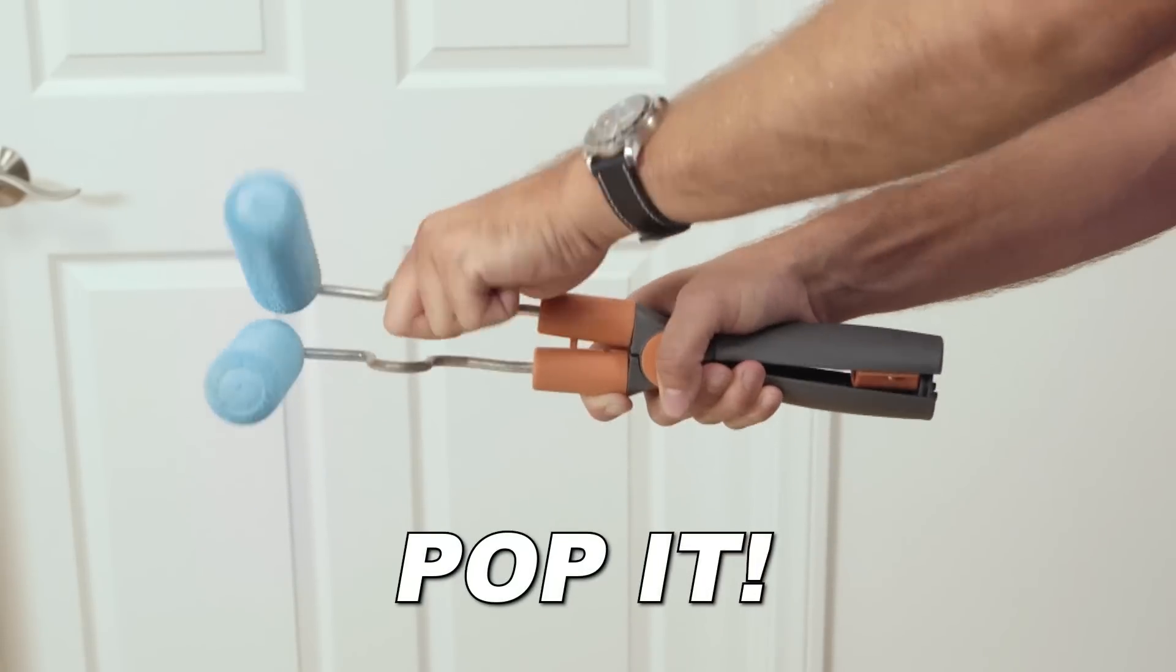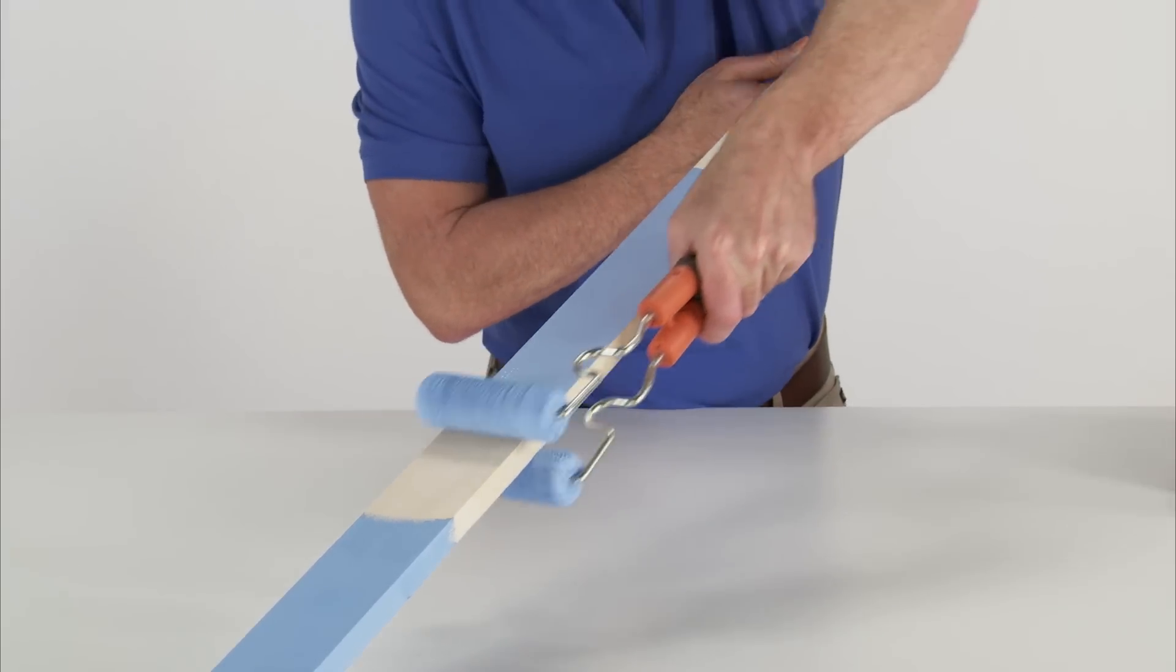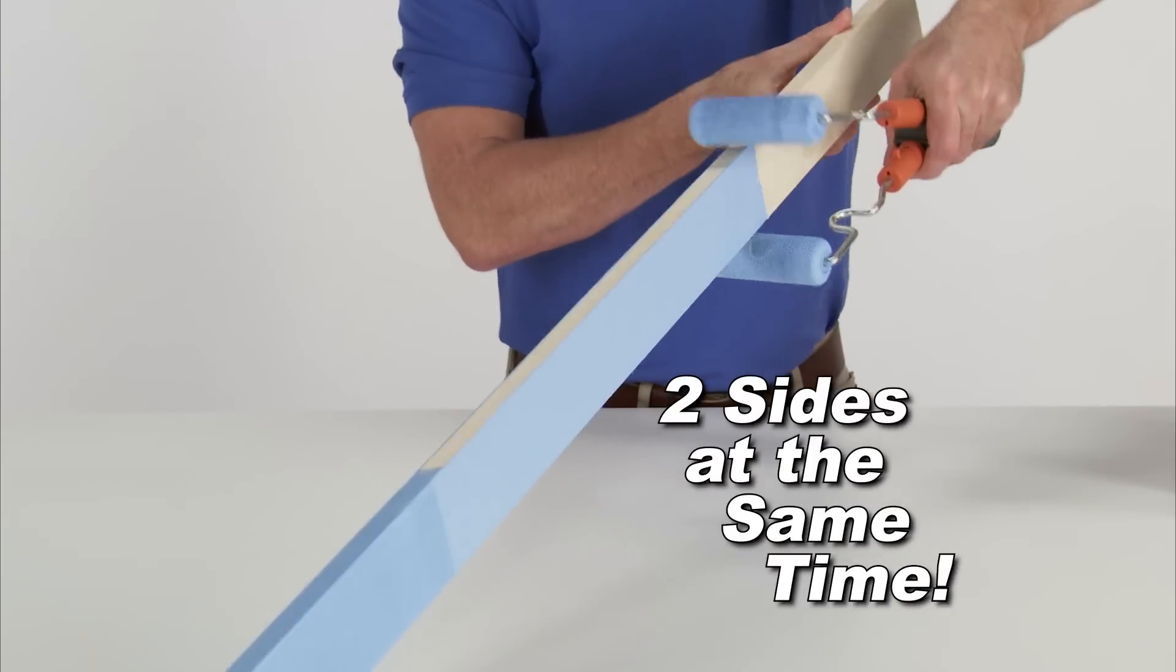Now pop it. Open up the handle and presto! Now you can paint both sides in one easy motion. That's two sides at the same time.